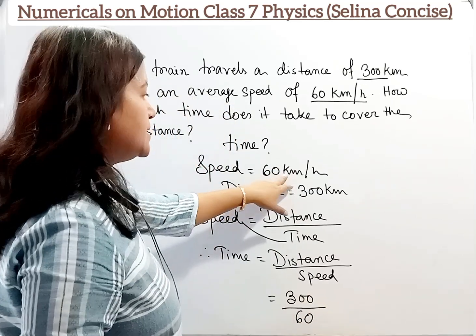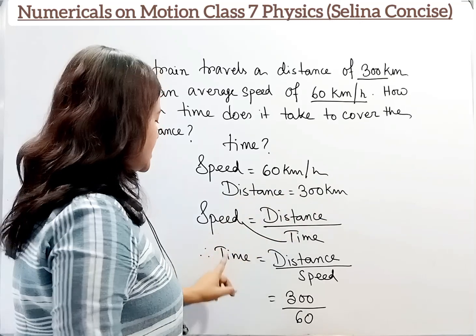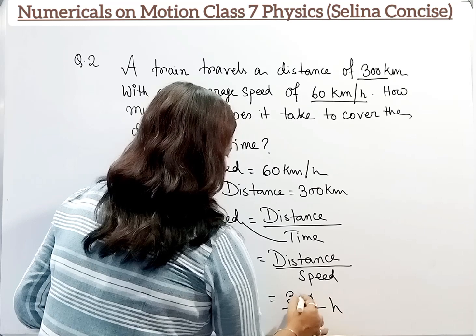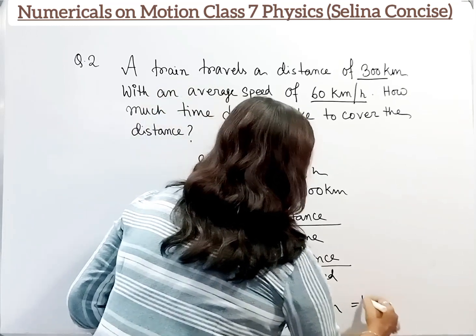Here the unit of speed is km per hour, that's why the unit of time will be hours. Now reduce it. Answer will be 5 hours.